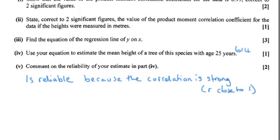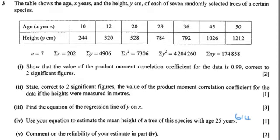The other reason is that the 25 that we found was within the data range that we've been given. If they'd asked us to estimate a tree's height when it's 80 years old, that would not be reliable because we'd be needing to use extrapolation to find it. In this case, it is reliable because it's in the data range that we've got.